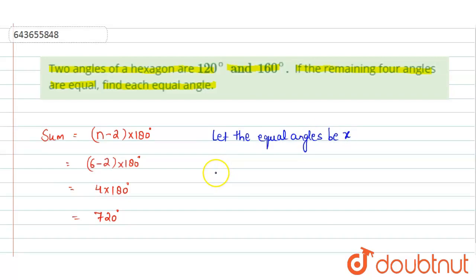so the sum of four equal angles will be x plus x plus x plus x, and the two angles are 120 degrees and 160 degrees. Now the sum of all the six interior angles is equal to 720 degrees.